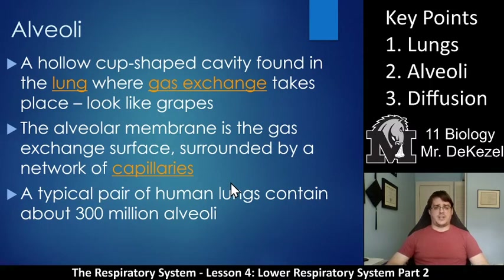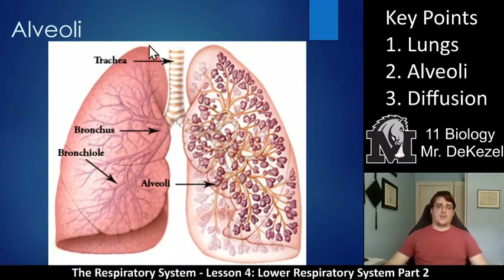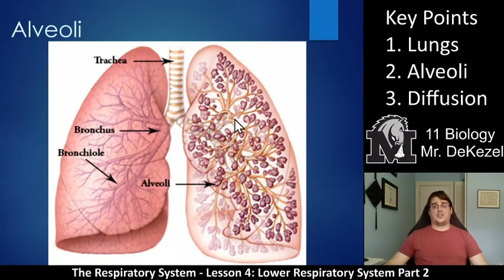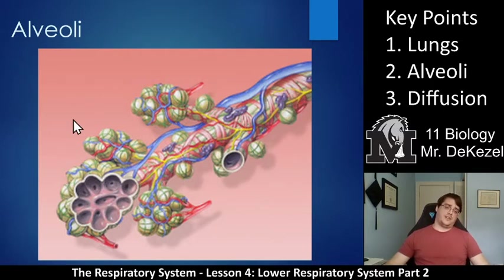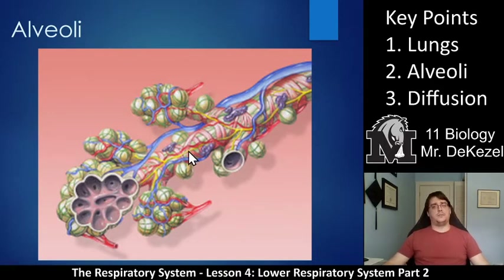Alveoli increase the surface area as much as possible so that we can take in as much oxygen as possible — just like villi do in your intestines. The lung branches off: each bronchus breaks into smaller and smaller ones until we get to alveoli at the end where gas exchange takes place. You can see all the blood vessels surrounding them — oxygen flows out of these sacs into the blood vessels to be taken to the body.